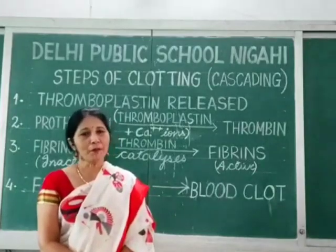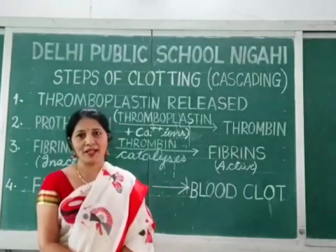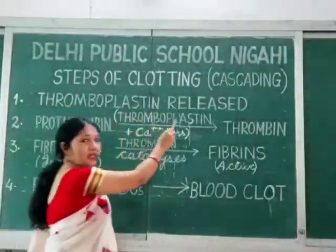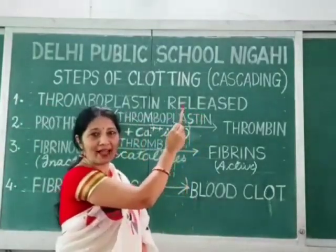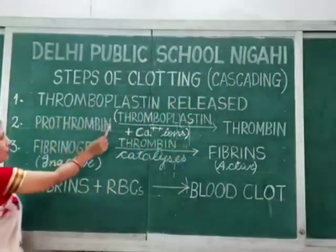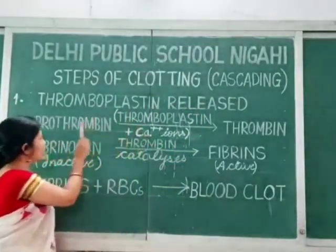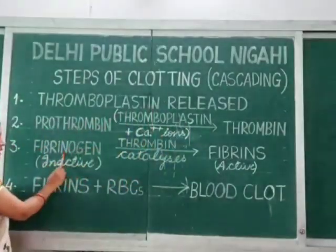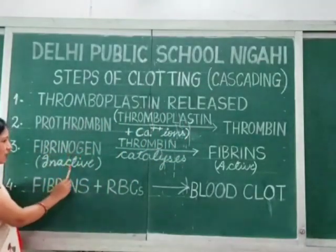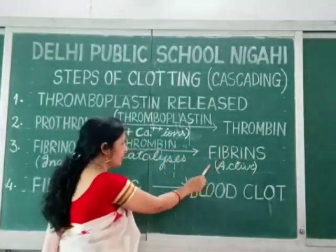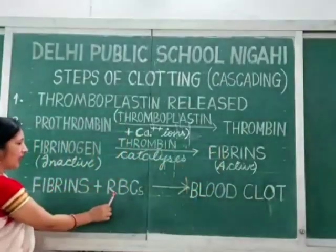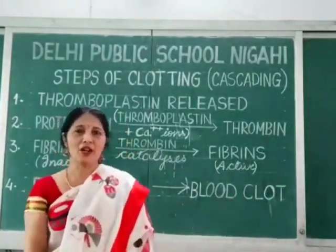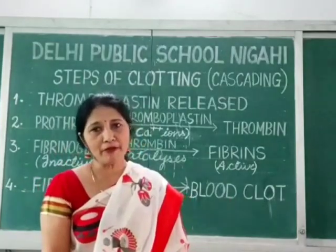I hope you must have understood the steps of clotting. Let us recapitulate: thromboplastin is released from damaged tissues and platelets. Thromboplastin along with calcium ions changes prothrombin to thrombin. Thrombin further catalyzes fibrinogen, which is the inactive form, to fibrins, which is the active form. Fibrin threads along with RBCs form a blood clot, which plugs the damaged area and prevents further loss of blood.